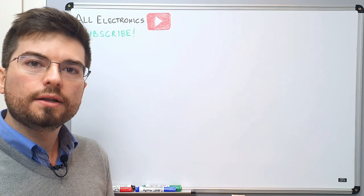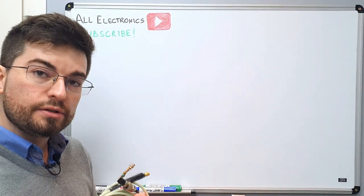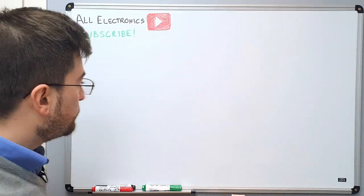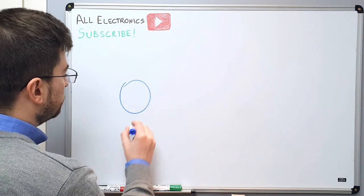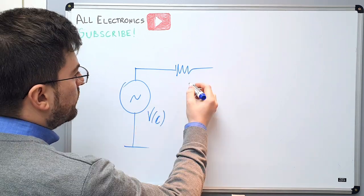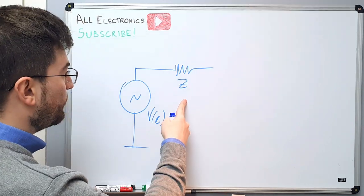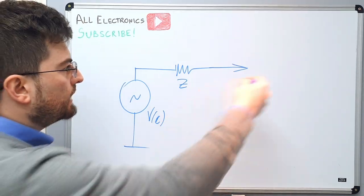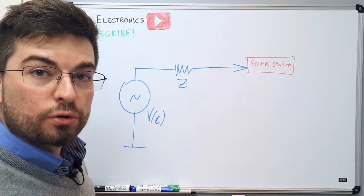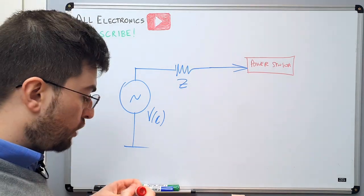How a diode detector works? How a power measurement system that uses diode detection really works? The basic problem of power measurement is that we have a signal source with an amplitude V, an output impedance Z that is a constant, and we want to connect a device here to detect the power available from this source. We already studied here on the channel what is the available power of a signal source.